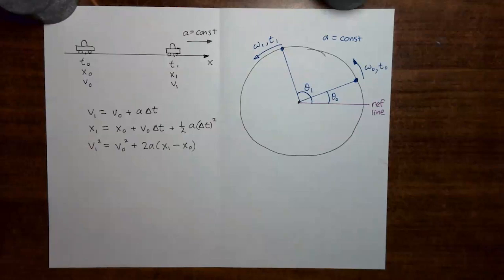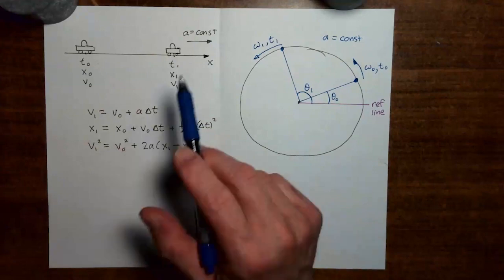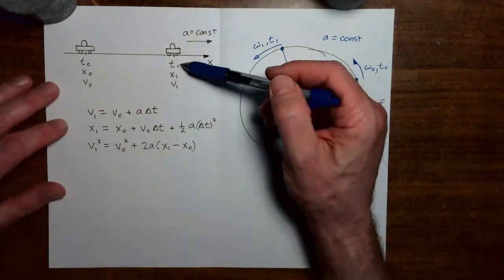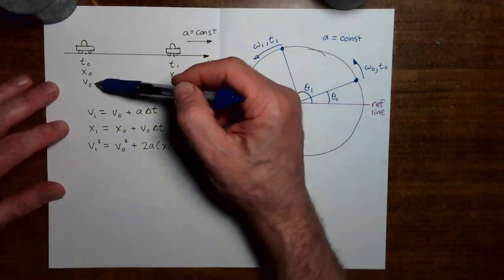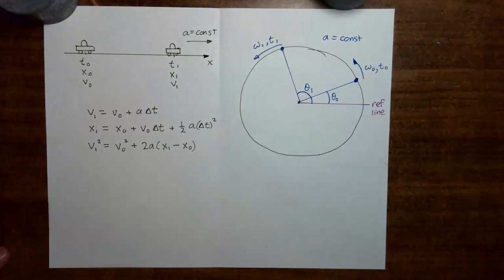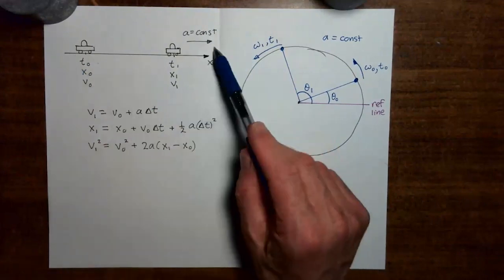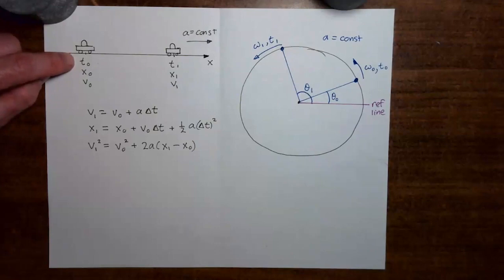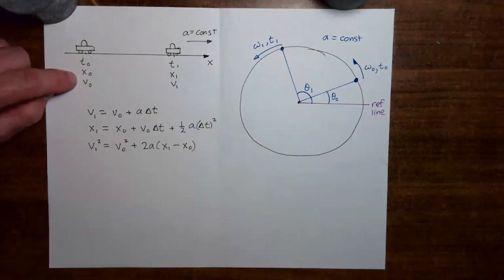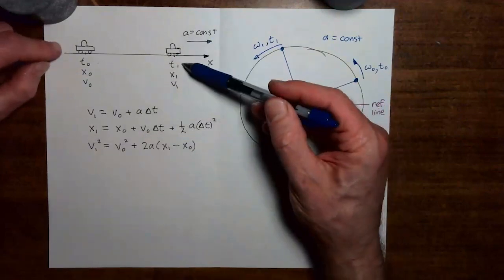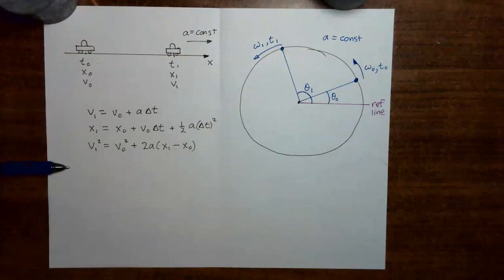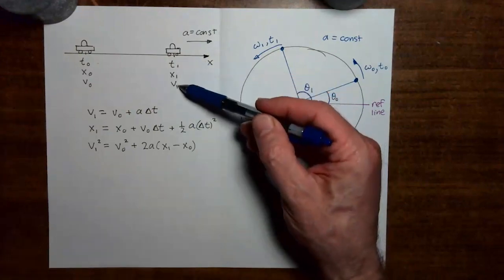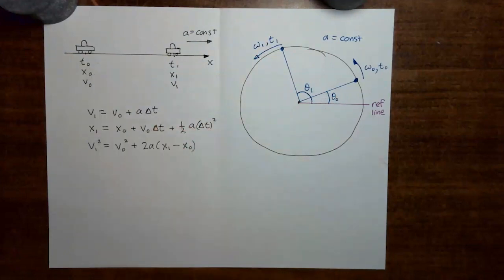Earlier in the course, we spent a fair amount of time solving problems involving objects moving in a straight line with a constant acceleration. To solve those problems, we had a set of equations which related the kinematic quantities at the later time to the kinematic quantities at the earlier time. Specifically, for an object moving along the x-axis with constant acceleration a, at the earlier time we have t₀, x₀, v₀, and at the later time t₁, x₁, v₁. We had three equations connecting these quantities, which I think are most useful.